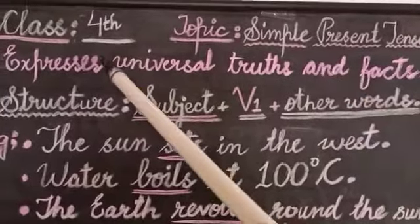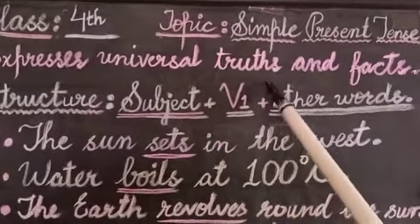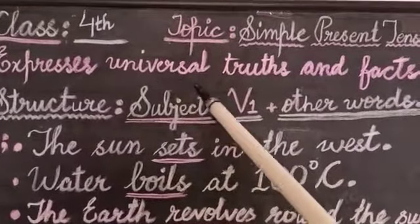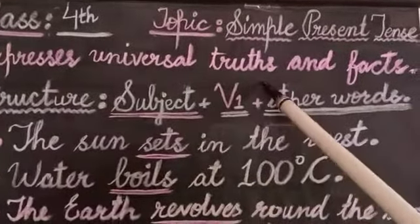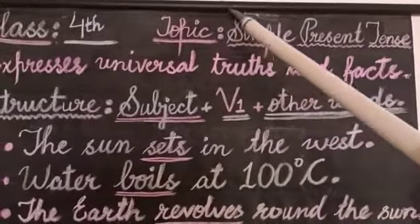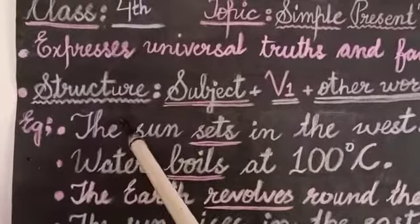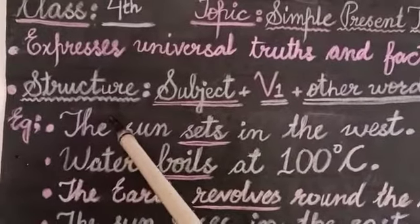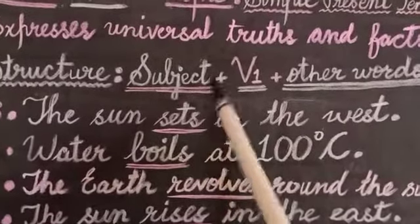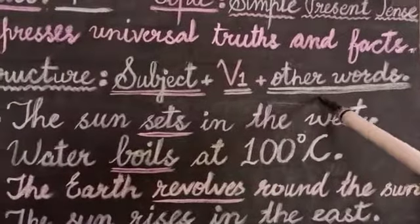It is used to express universal truths and facts. My dear students, whenever you have to express some universal truth or a general fact, at that time you have to use the simple present tense. The structure to be followed is: subject, then the first form of the verb, then the other words.